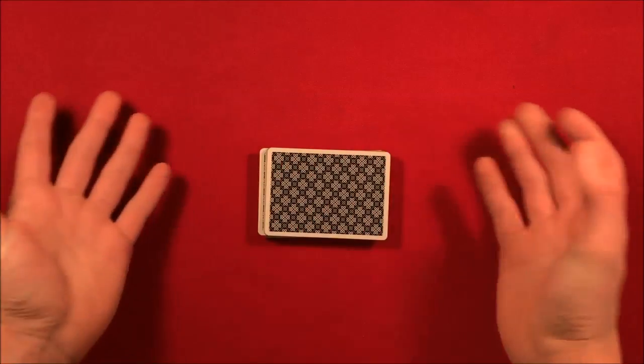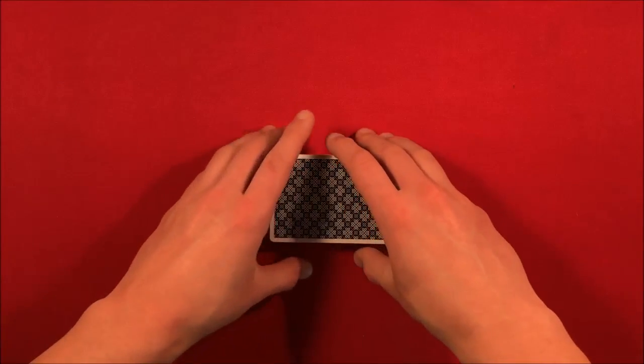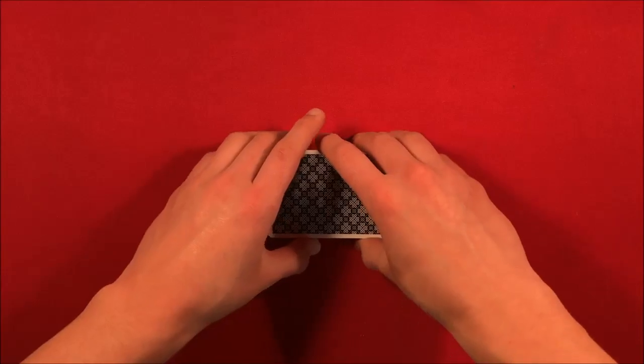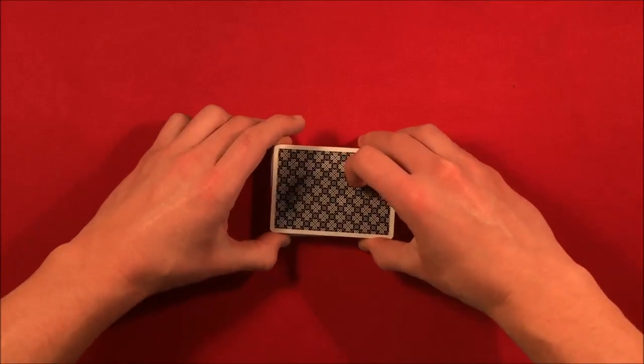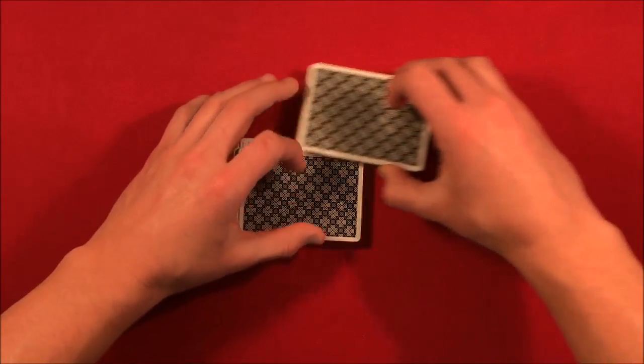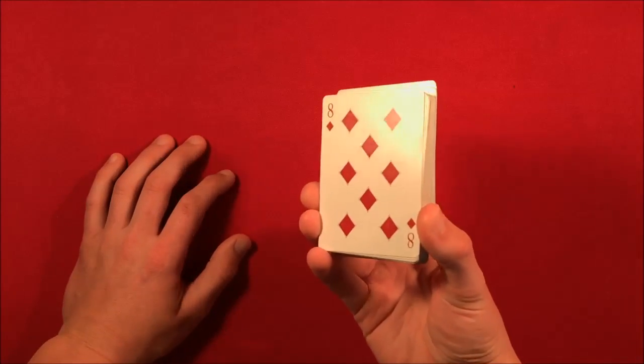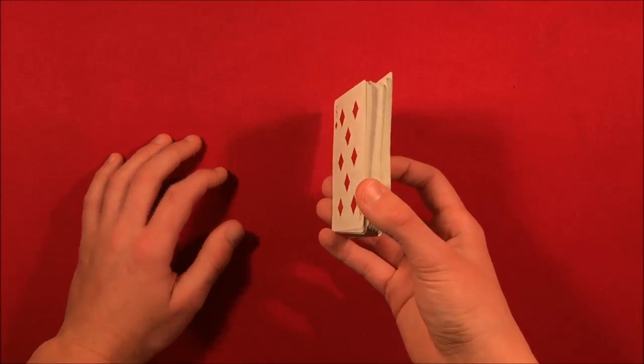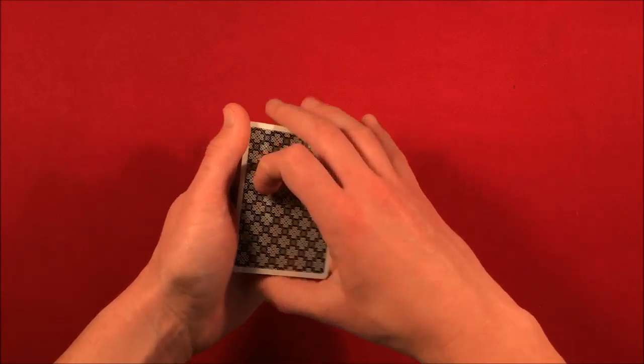So then this is optional, but what I did was a Dai Vernon false cut. It's really simple, I'll leave a link here if you guys want to learn how to do it, but essentially you're just splitting up the deck into three separate piles. This isn't actually mixing up the deck at all, and the card's still going to be in the bottom.